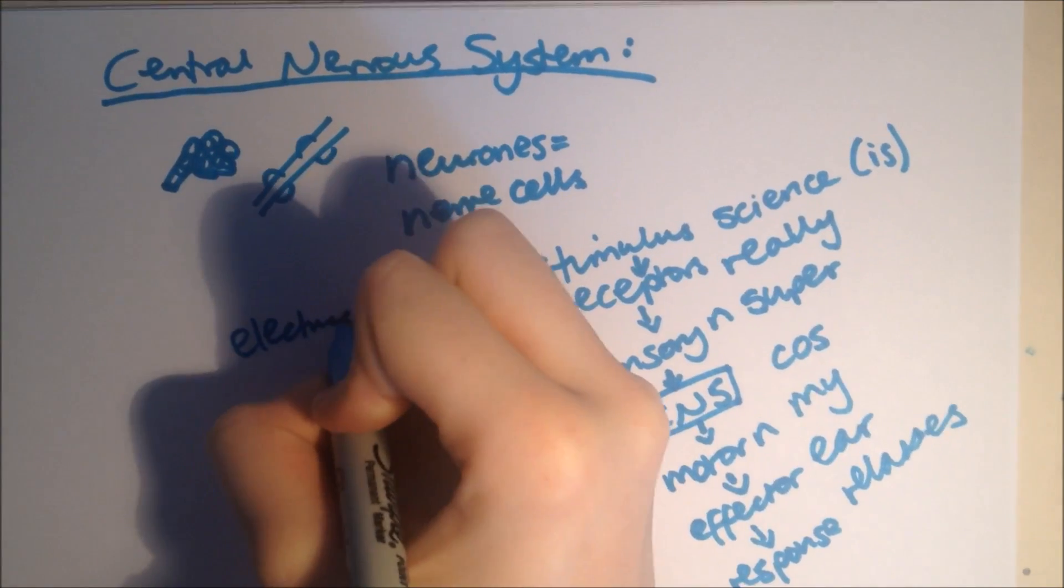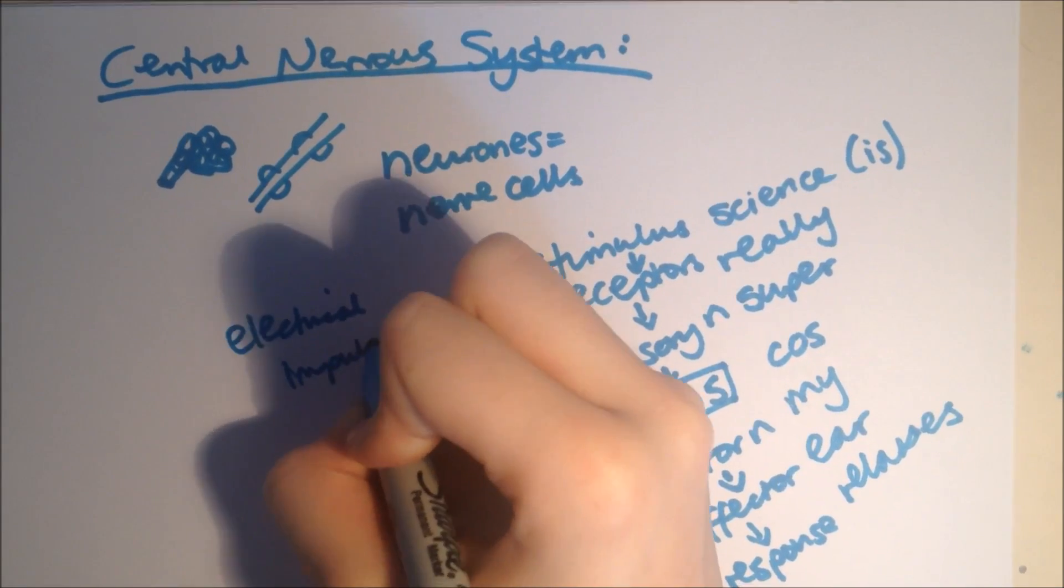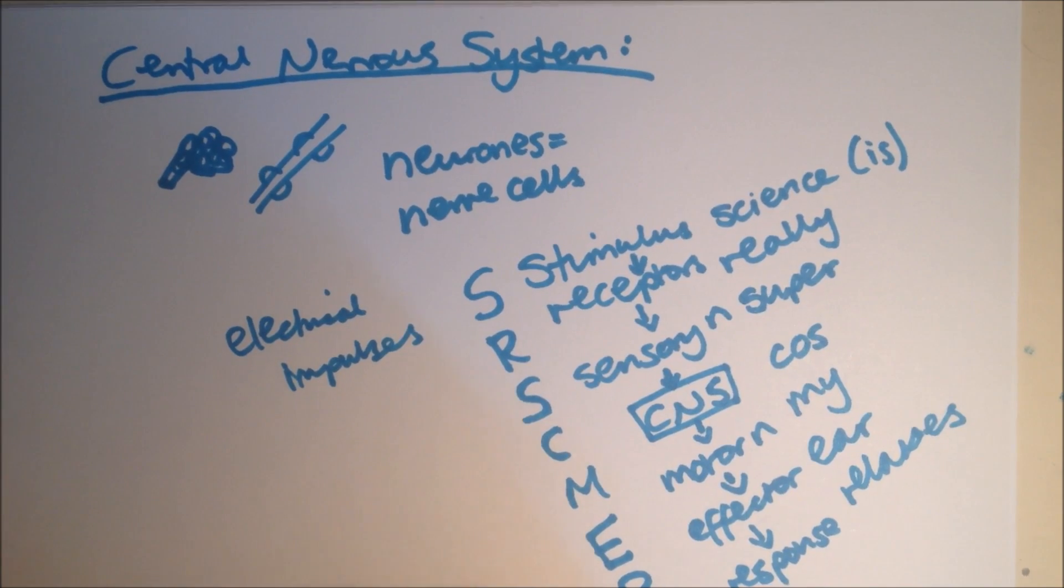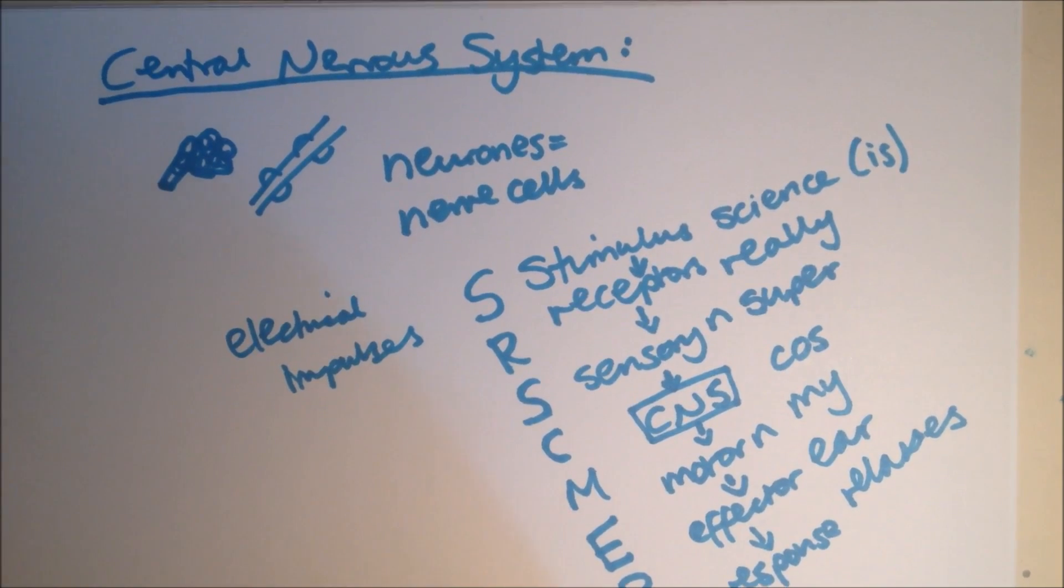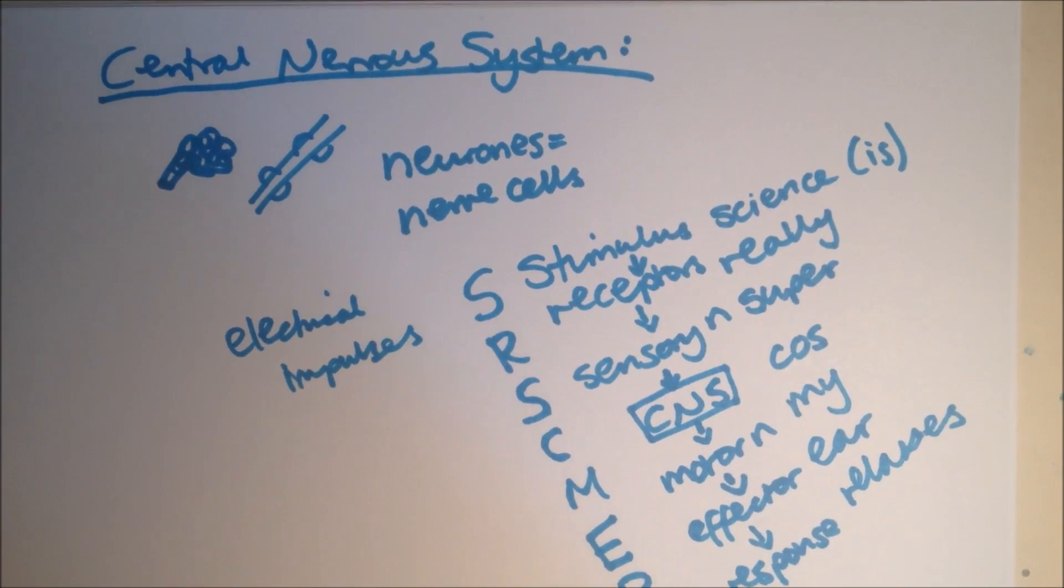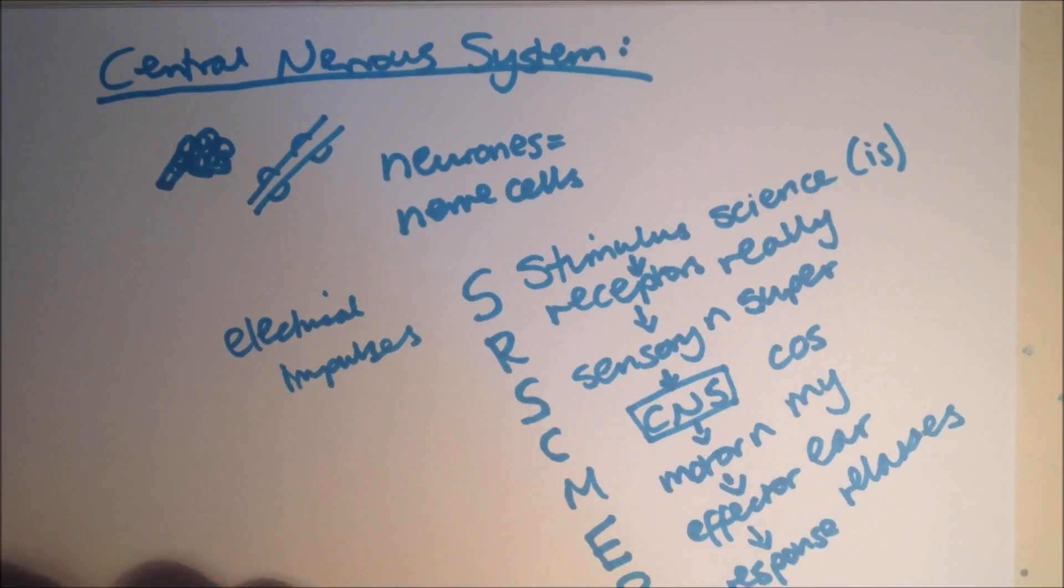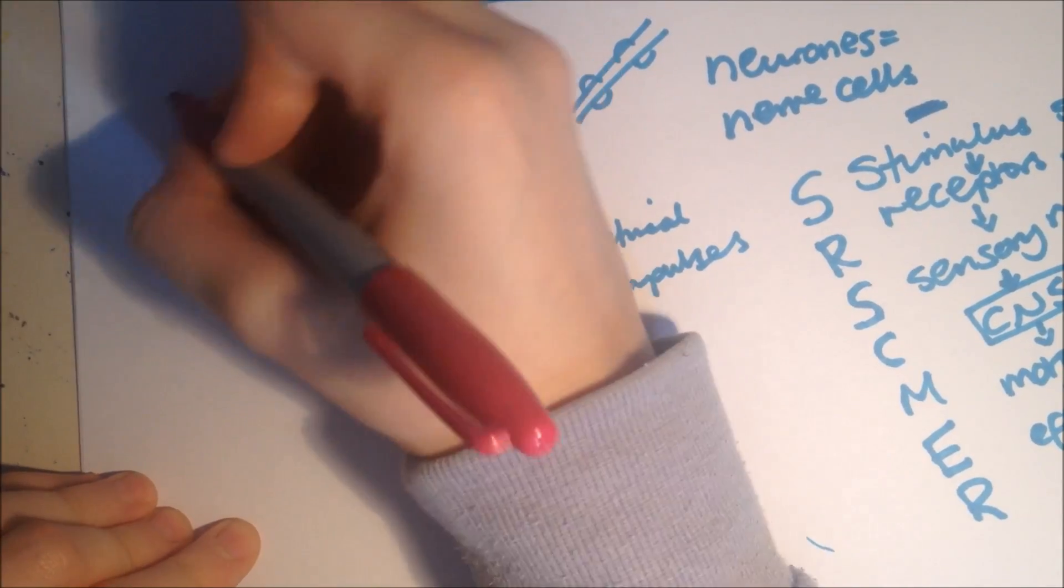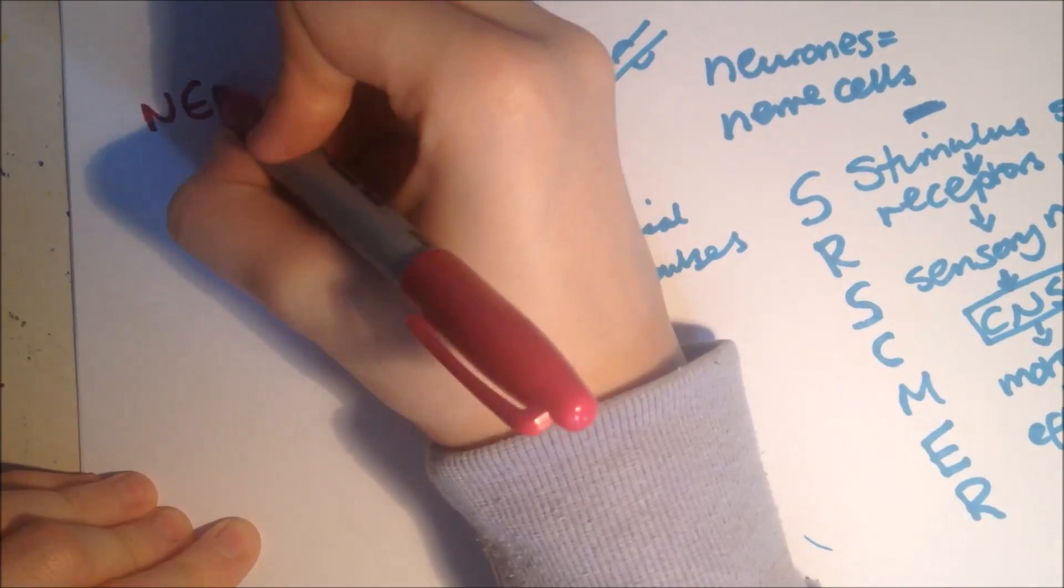So, to stop you injuring yourself, you have a reflex action, which is where the nervous system use electrical impulses, to allow very quick response. And they're automatic, and they're done without thinking, and they're really quick. The conscious brain is involved, it's just the CNS, which is just a part of the CNS, which is automatic. Okay, on to our next part, which is neurons.